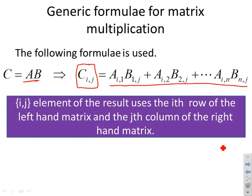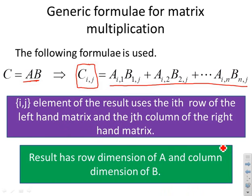The ij element of the result uses the ith row of the left-hand matrix and the jth column of the right-hand matrix. The result C has its row dimension taken from A and column dimension from B.